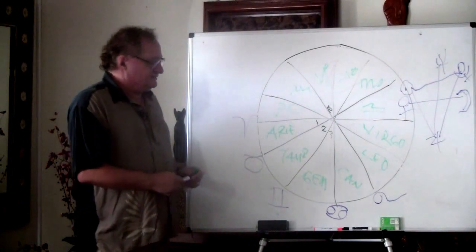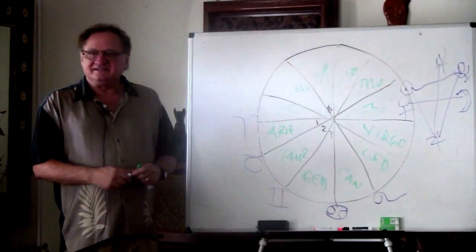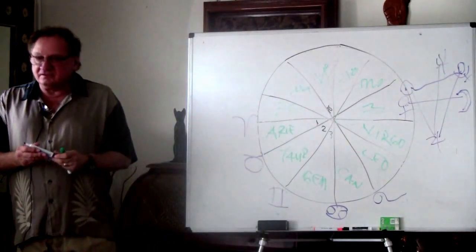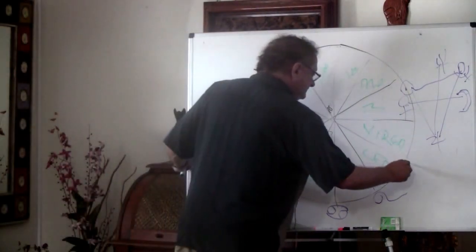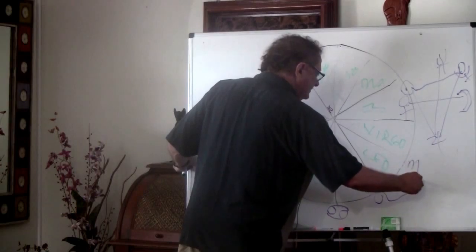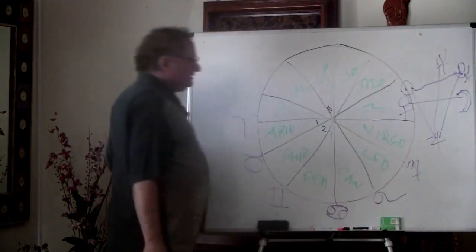And Virgo is the next one. Virgo is pretty easy. Virgo relates to the Virgin. And what was her name? Let's make a little M here. Mary.